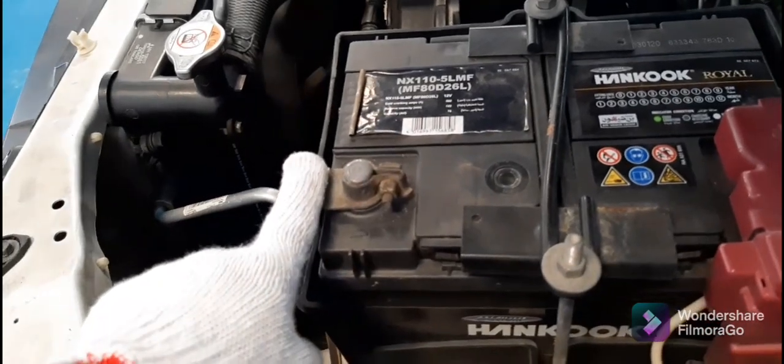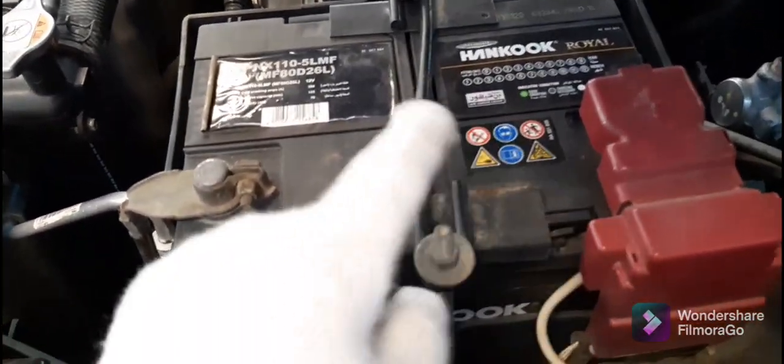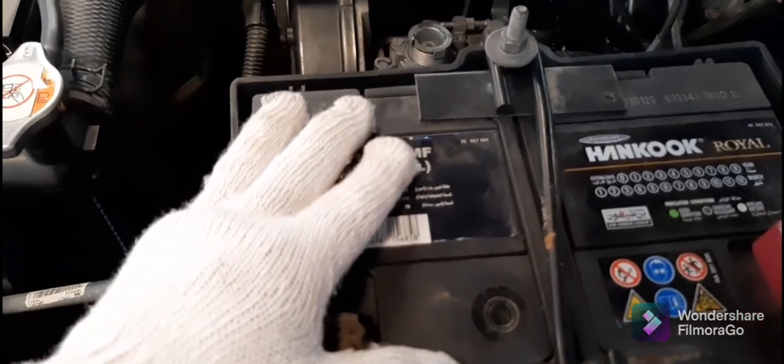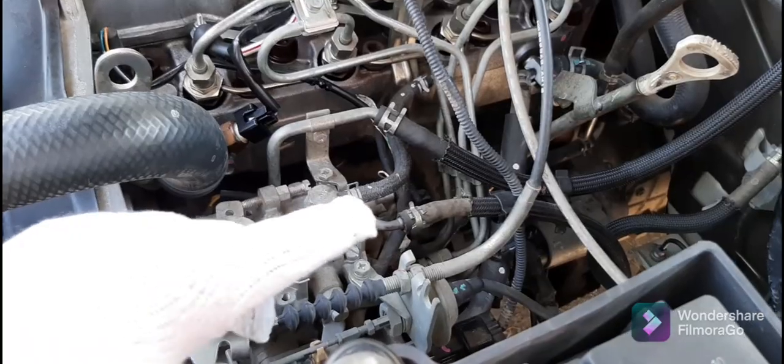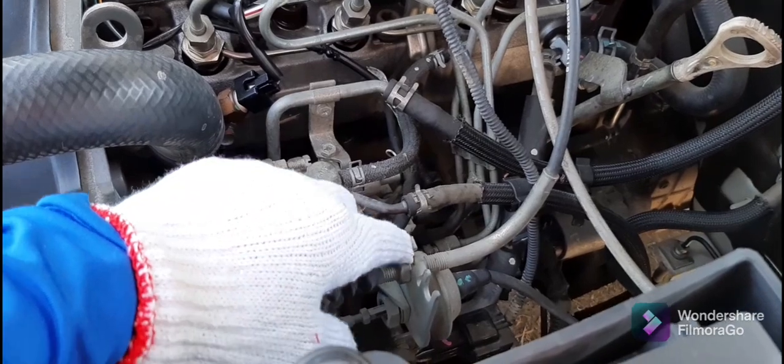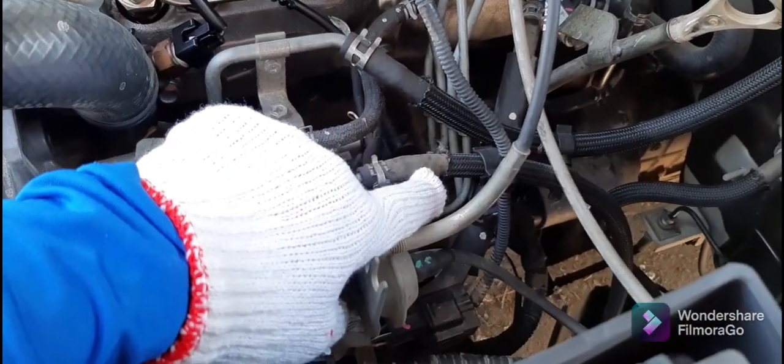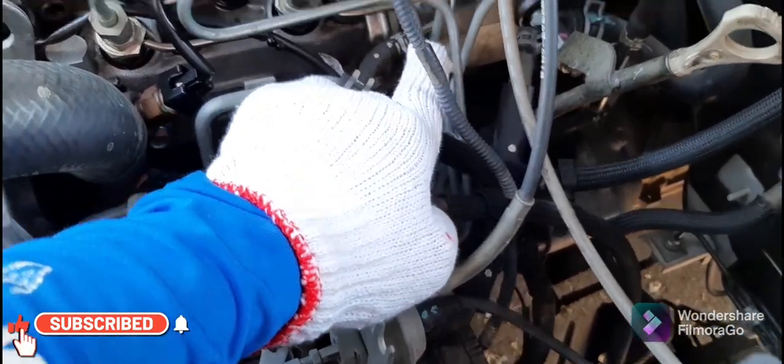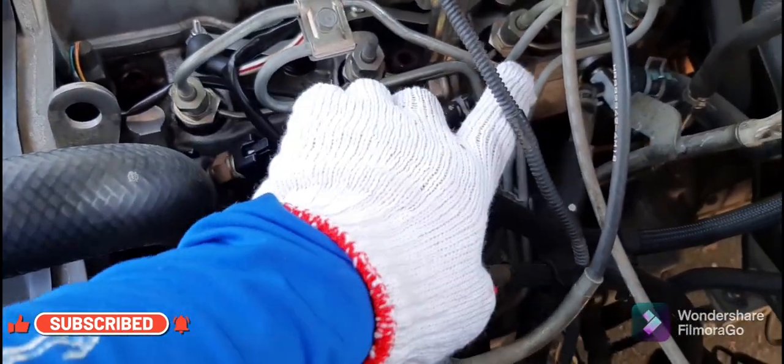Disconnect the negative and the positive battery clamp so that we can remove the battery, and then we can easily remove the delivery pipe from our injection pump going to our injectors.